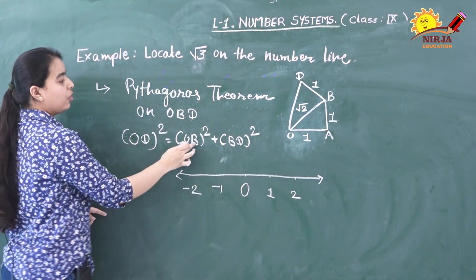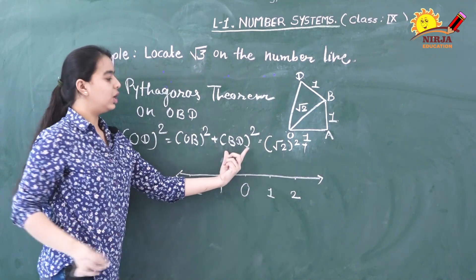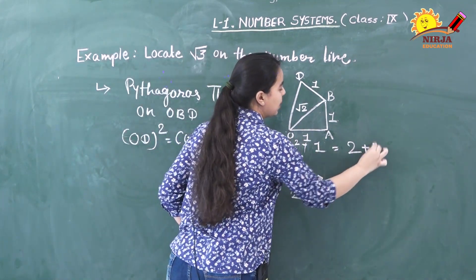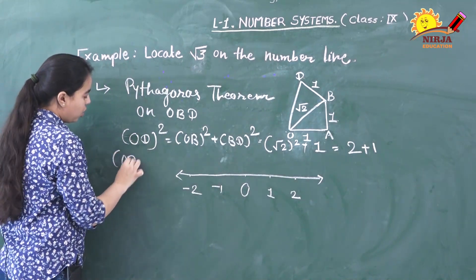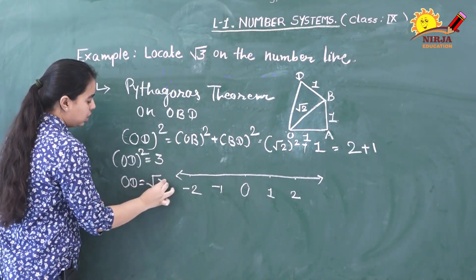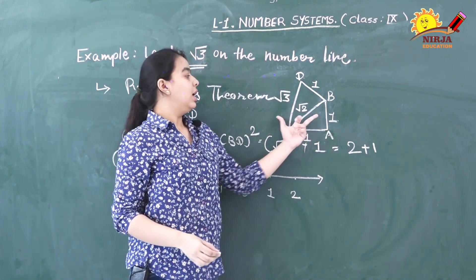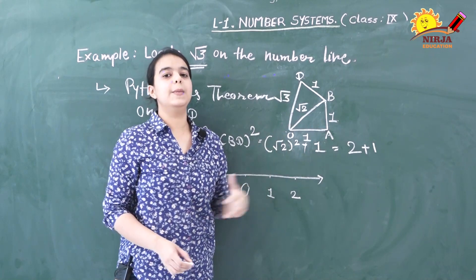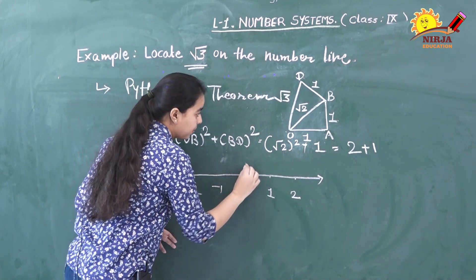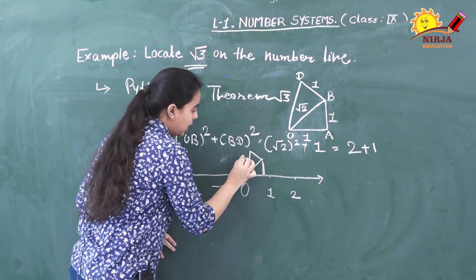Applying the Pythagorean theorem to triangle OBD: OD² = OB² + BD². The value of OB is √2, so OD² = (√2)² + 1² = 2 + 1 = 3. Therefore OD = √3. Now we need to place this figure on the number line such that O and 0 have the same point, and this gives us √3.